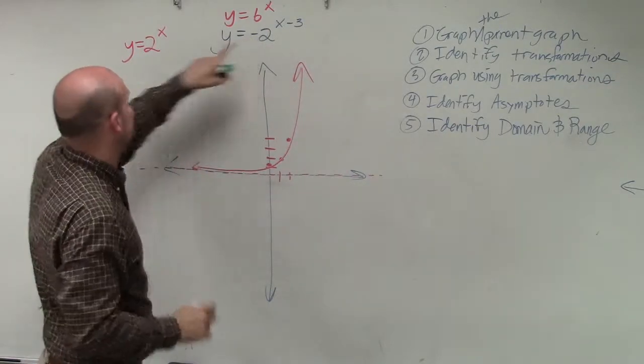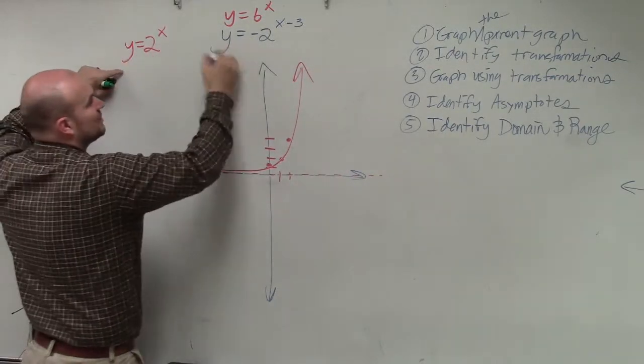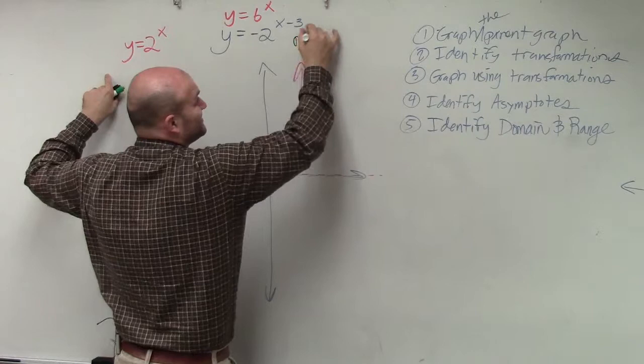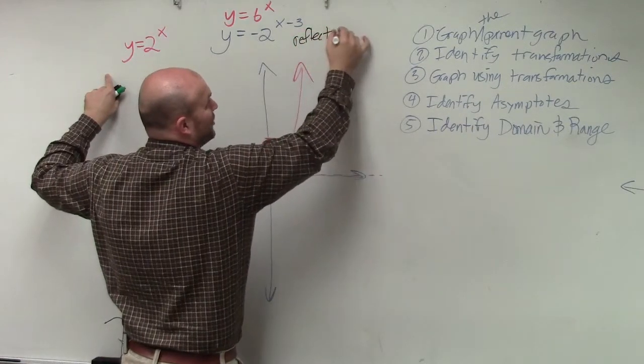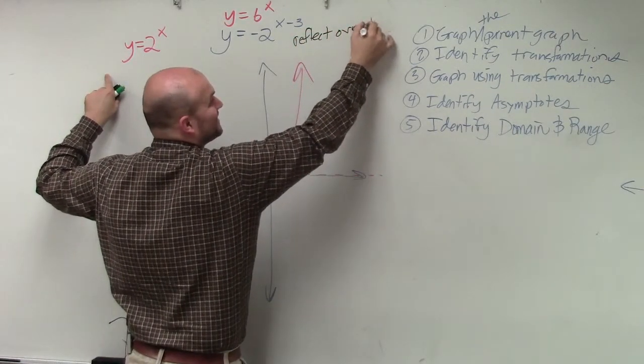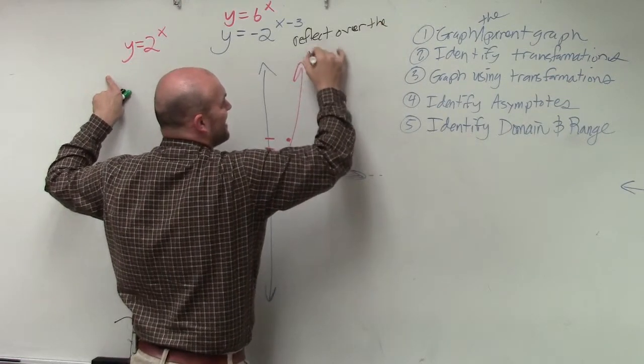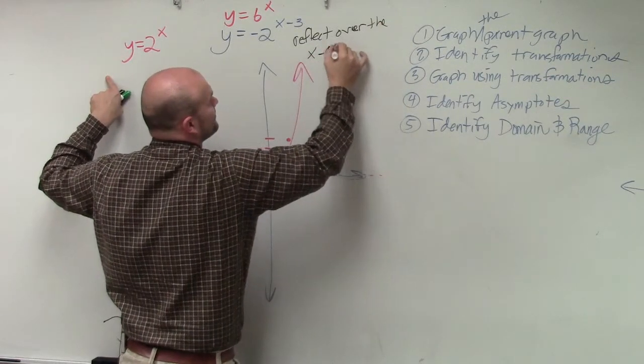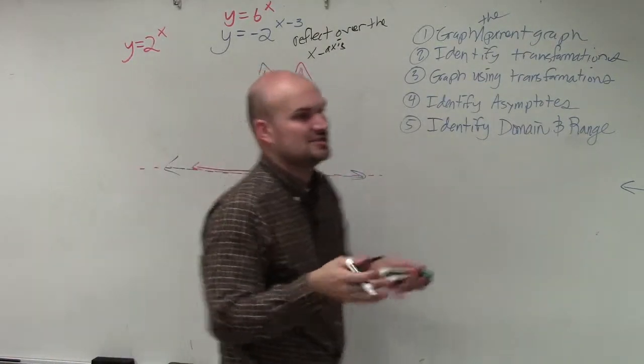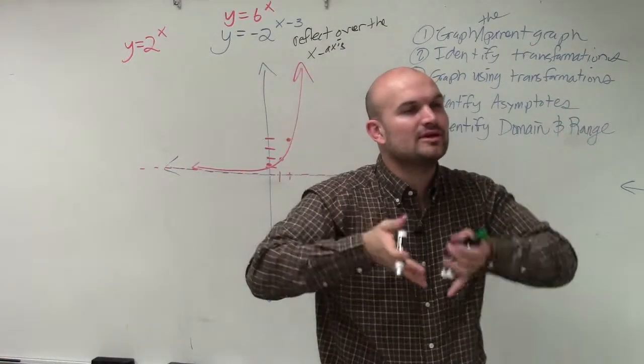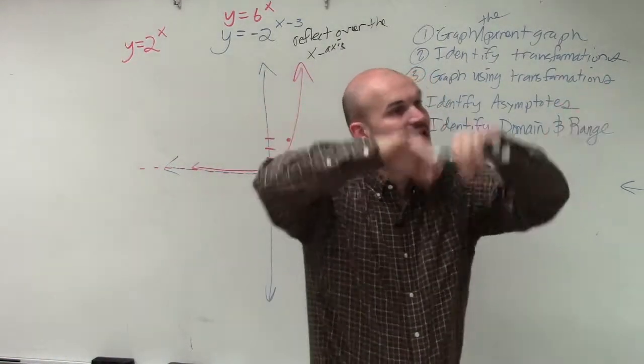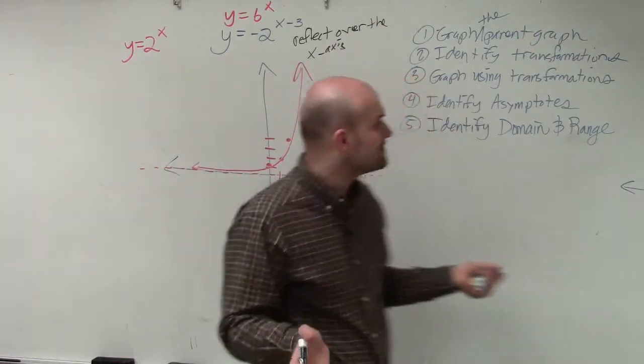The negative, since it's being multiplied by your function, is going to tell us to reflect over—I'm waiting for somebody to chime in—the x-axis. Thank you very much. It's going to reflect over the x-axis. Just think of it like parabolas. Remember when your parabola had a negative? Then you reflected down. It's the exact same thing.